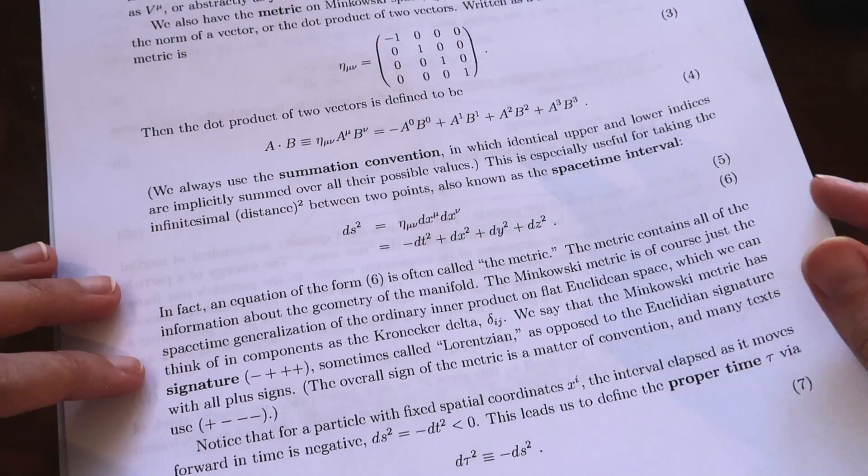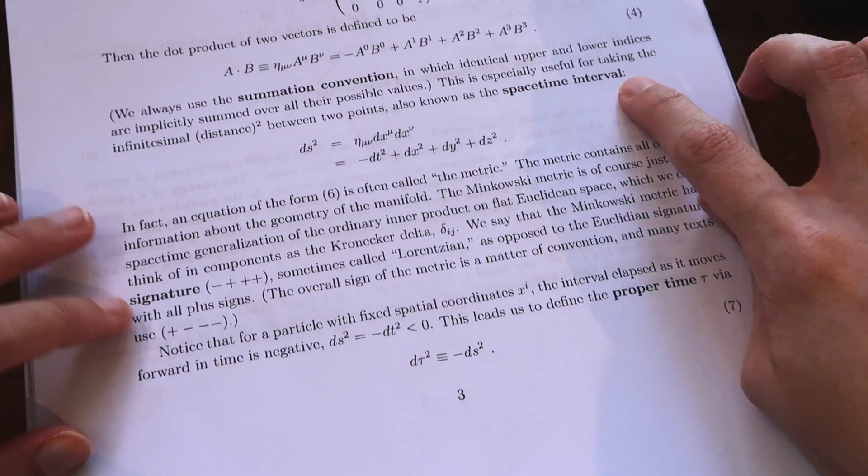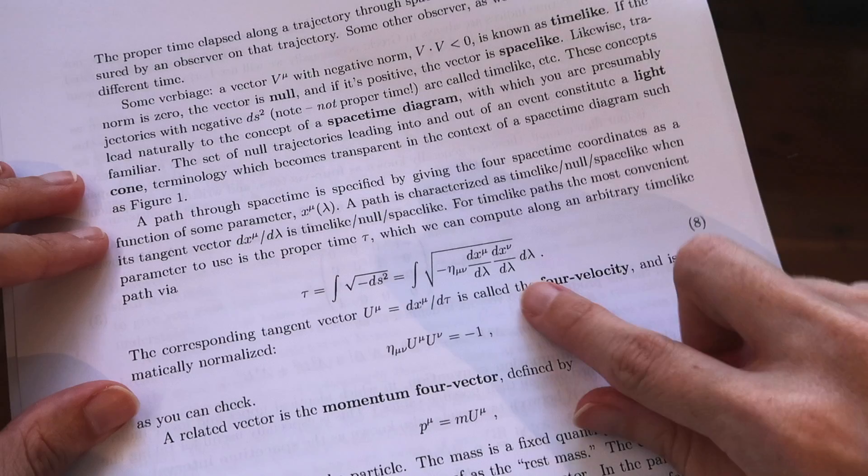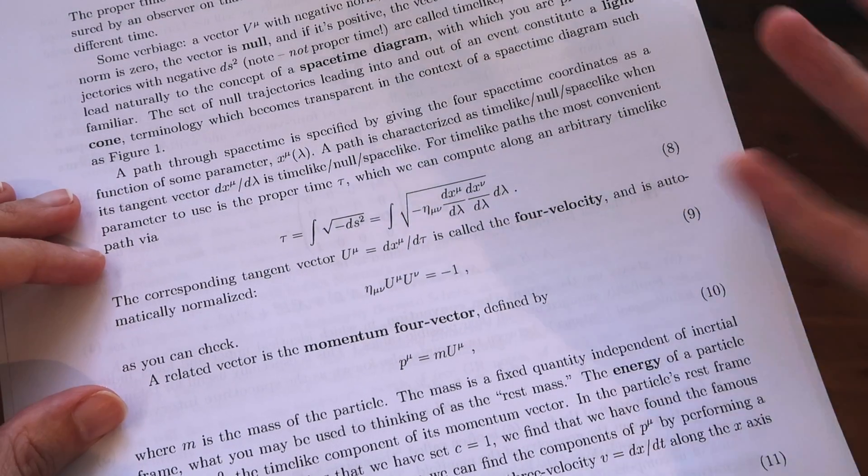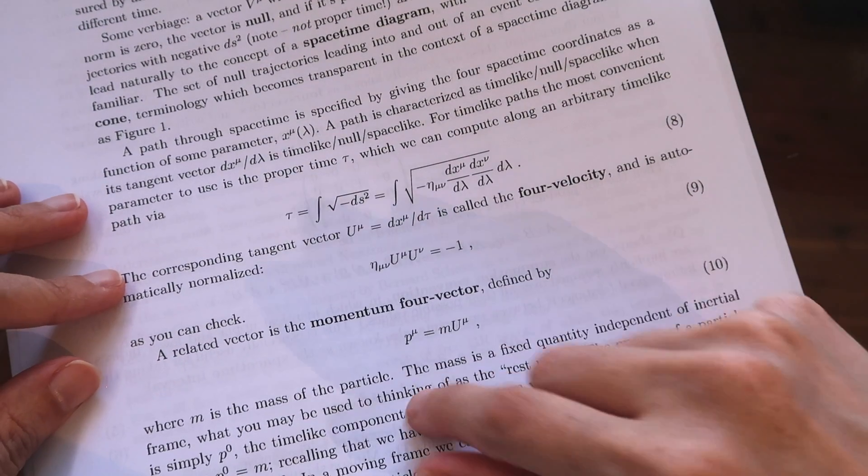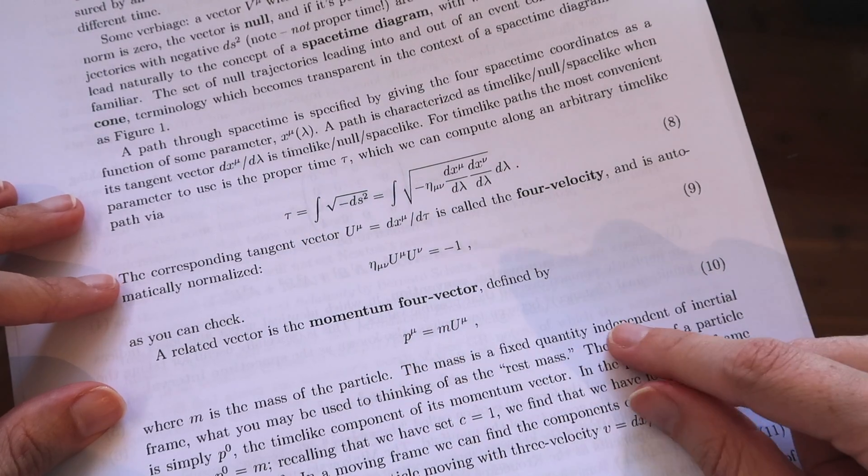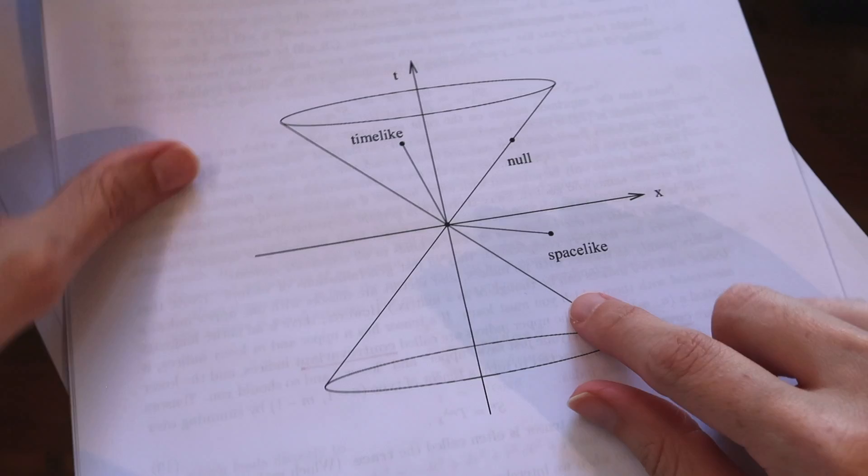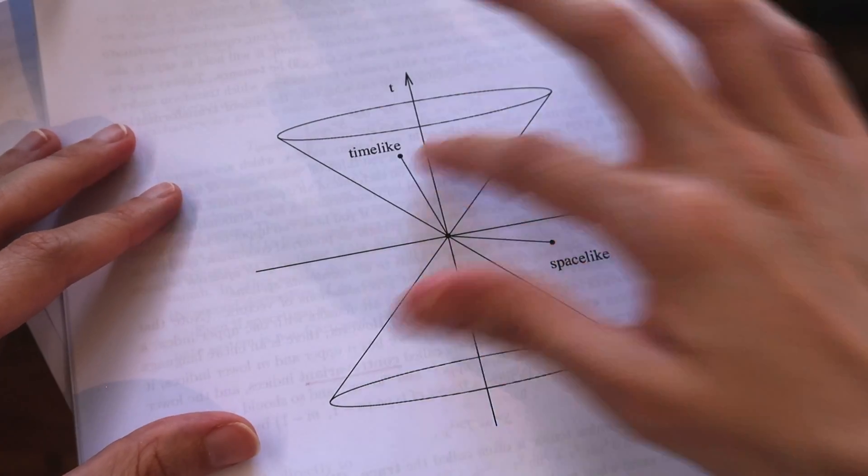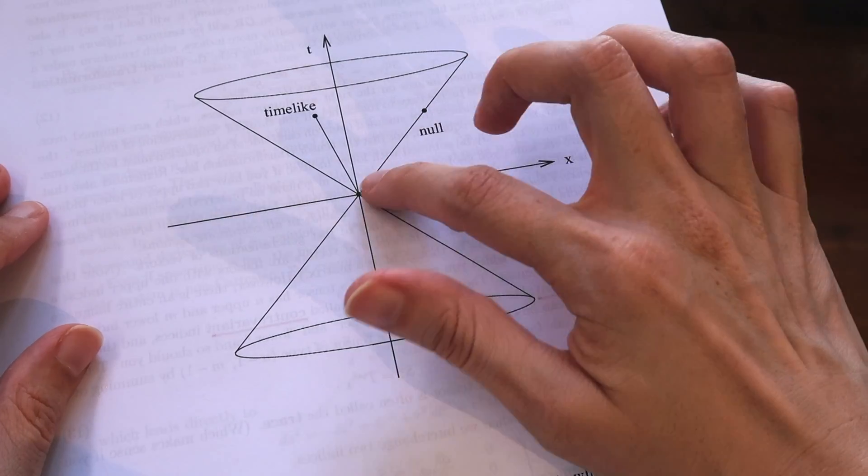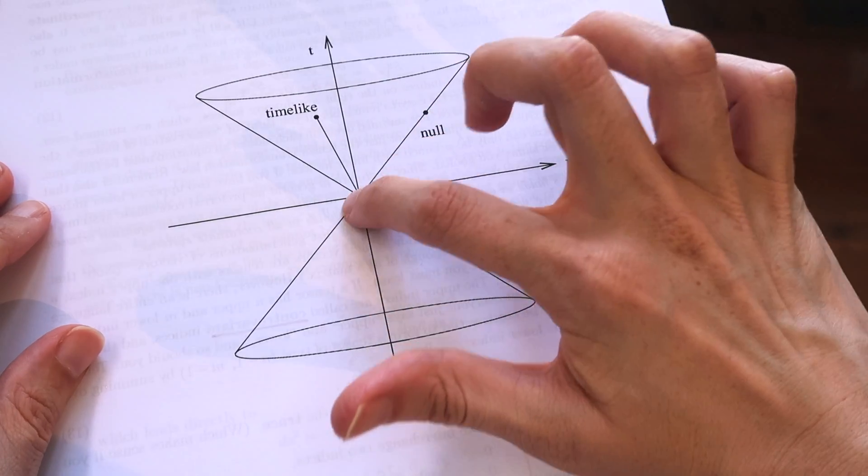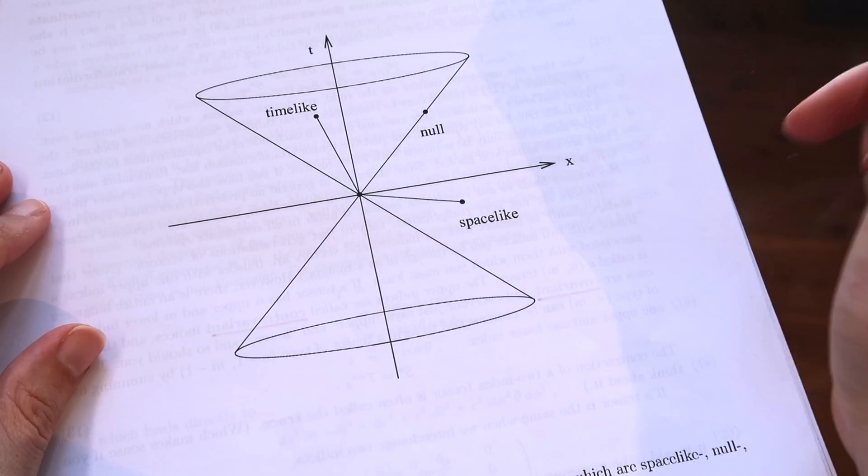The next few pages discuss ideas such as the space time interval, proper time, four velocity which is velocity using four vectors and likewise a momentum four vector. We discuss the idea of time like and space like with respect to light cones and the light cone, the edges of the cone here represent traveling at the speed of light.